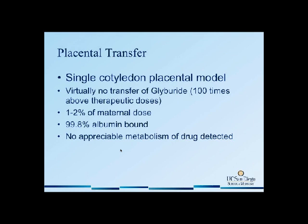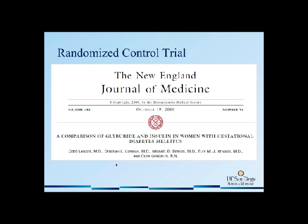Early studies in vitro using single cotyledon placental models showed that there was virtually no transfer of glyburide across the placenta using doses 100 times that normally used, and there was also no appreciable metabolism of the drug in the placenta. This is important because the placenta actually metabolizes some medications. These results led to the desire to use glyburide in pregnancy, as it was demonstrated that it did not cross the placenta.